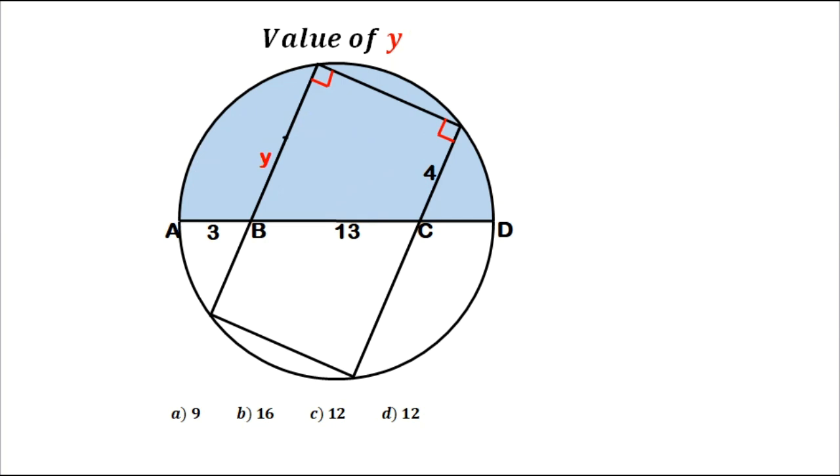If you've done that, the inscribed rectangle will be symmetrical about the diameter. So it means if this length from this point to B is y, then from C to this point is also y.